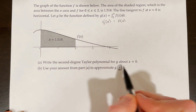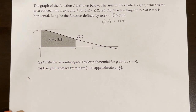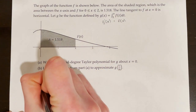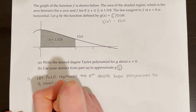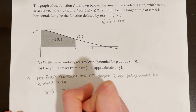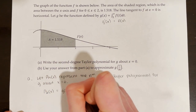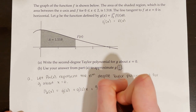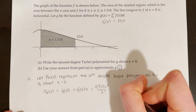Part a says write the second degree Taylor polynomial for g about x equals 0. Let p sub n of x represent the nth degree Taylor polynomial for g about x equals 0. Then p sub 2 of x equals g of 0 plus g prime of 0 times x plus g double prime of 0 times x squared over 2 factorial. We need to find g of 0, g prime of 0, and g double prime of 0.